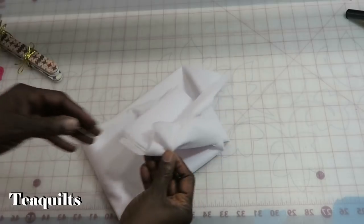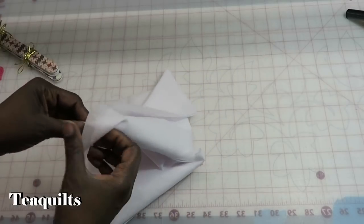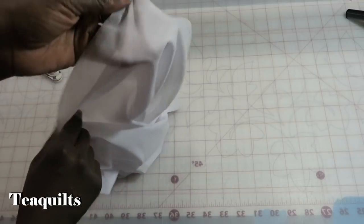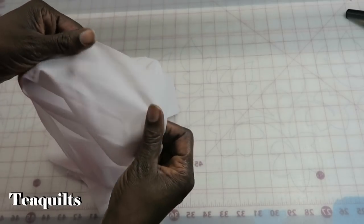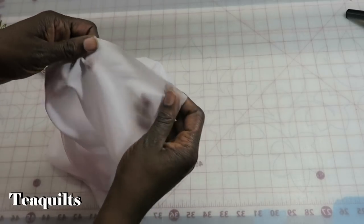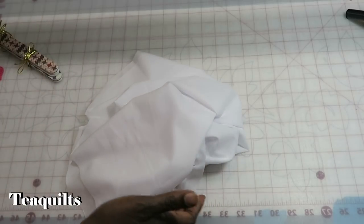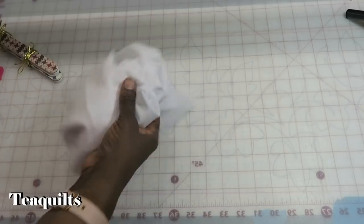So this is silk interfacing that you're supposed to put on the back of silk dupioni or any kind of silk to keep it from fraying. But I thought I would try it and see what the hand would be on t-shirts.